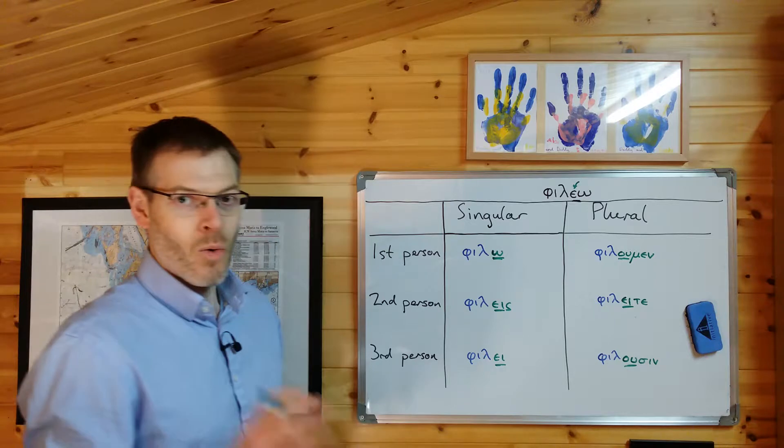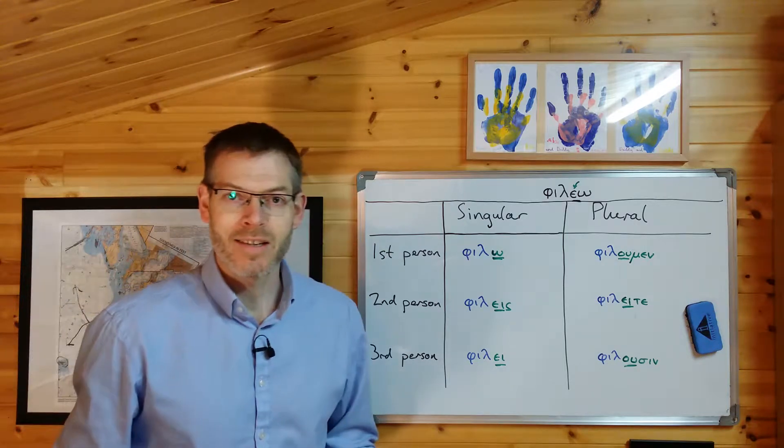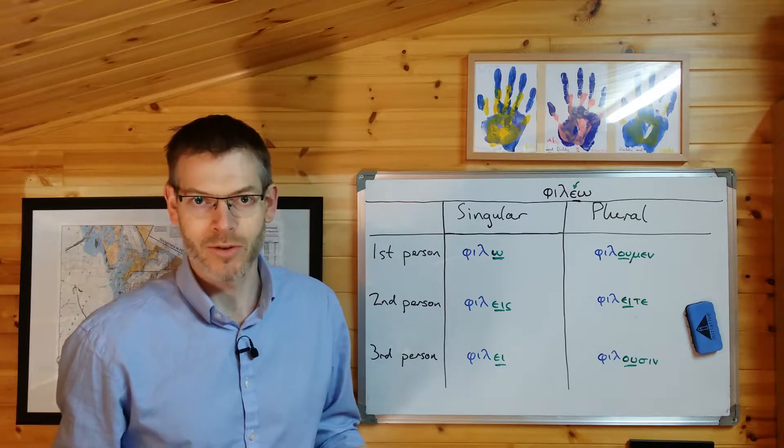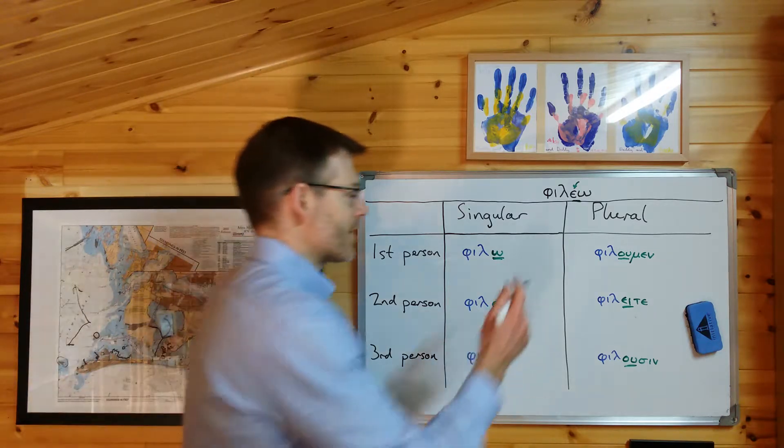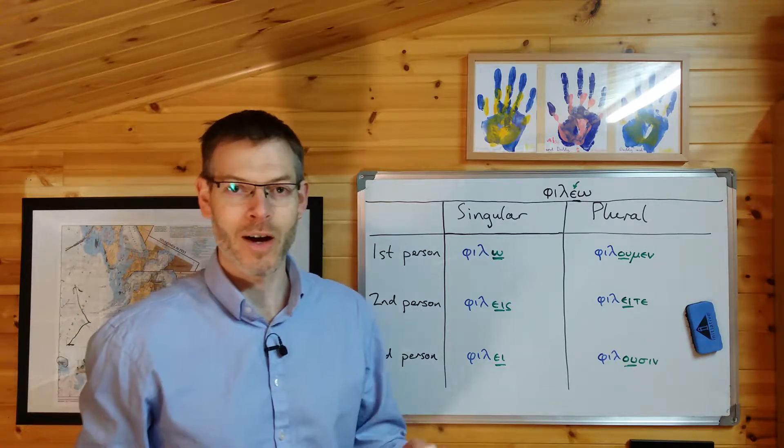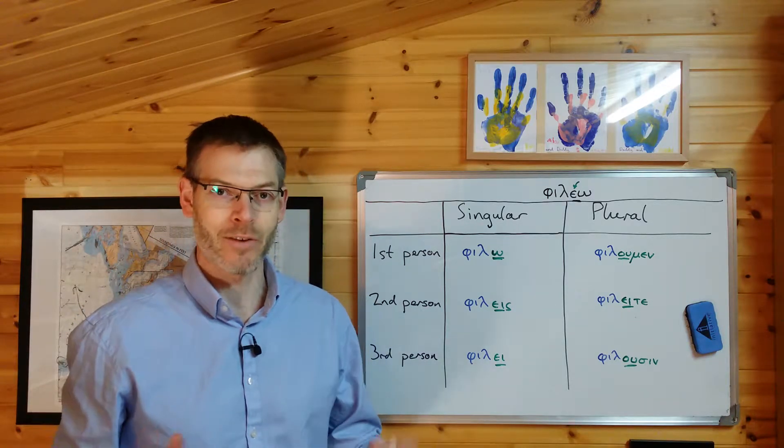Just a final note, Duff mentions this. When φιλέω is cited in a dictionary, the lexical form, so-called, the form that appears in a dictionary, is always the form with the epsilon there, even though it's never used. So the lexical form of λύω is the first-person singular, present, indicative, active, λύω.